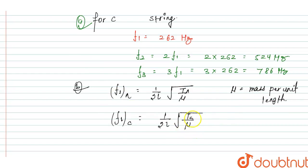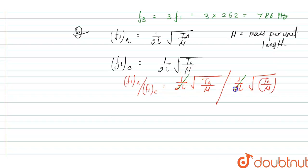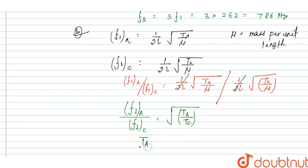Since mass per unit length is the same for both strings, we take the ratio f1_A / f1_C = √(Ta / μ) / √(Tc / μ). The terms 1/2L and μ cancel out, giving us Ta / Tc = (f1_A / f1_C)².